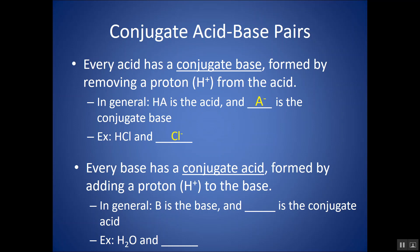Every base has a conjugate acid, formed by adding or accepting a proton to the base. If B is the base, BH+ is the conjugate acid once it accepts H+; it's then capable of donating that H+ and turning back into B. For example, if H2O is the base, it accepts H+ and turns into its conjugate acid, H3O+ the hydronium ion. Hydronium can then act as an acid and turn back into its conjugate base — that is a conjugate acid-base pair.